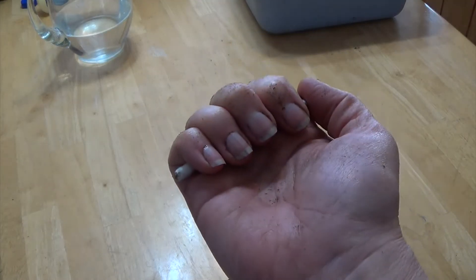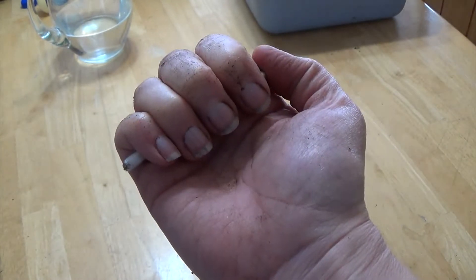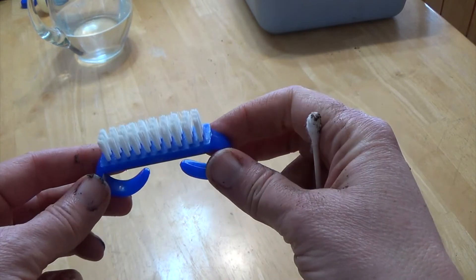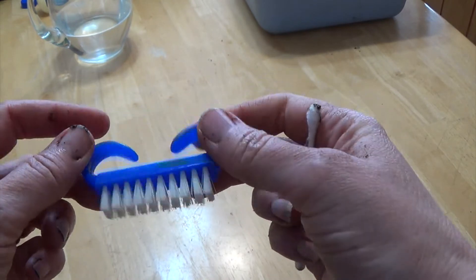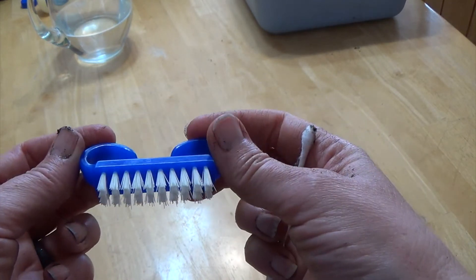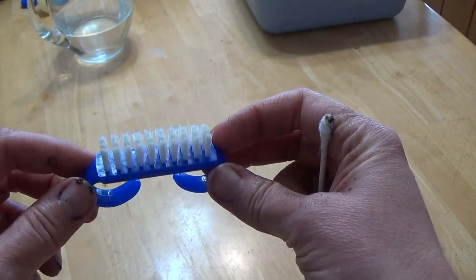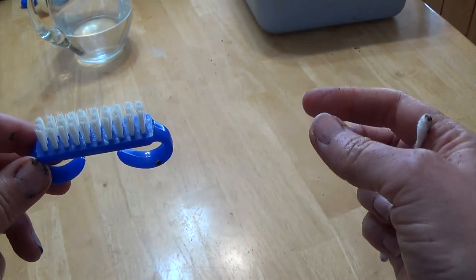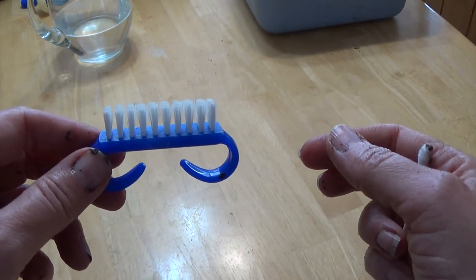Once you get the majority of the Vaseline out, you can wash your hands like you normally would with soap and water and you can also use a nail brush. This one was just picked up at the dollar store so you don't have to spend a whole lot of money. You can even go get a small jar of the petroleum jelly, Vaseline, whatever at the dollar store as well.